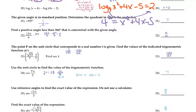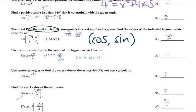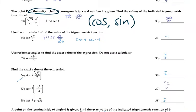Number 33: you're finding secant. Secant is the reciprocal of cosine. If you're given a coordinate point on the unit circle, the x-coordinate is cosine and the y-coordinate is sine. So just flip the cosine value and rationalize it to get secant.